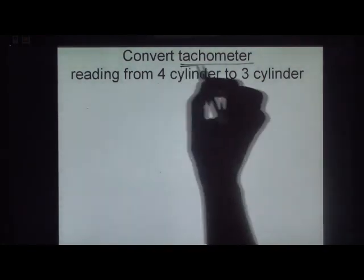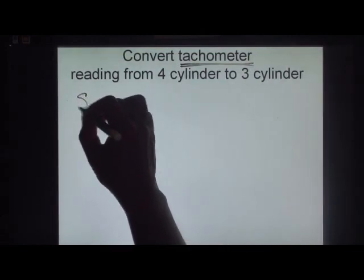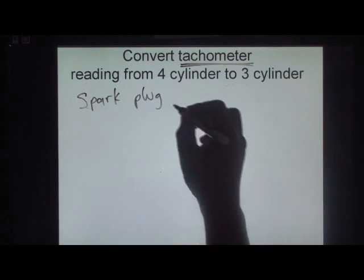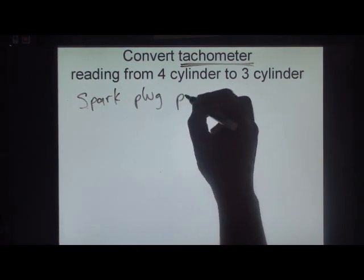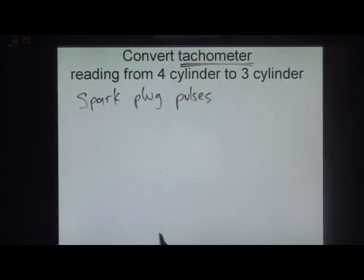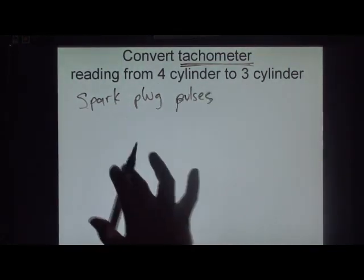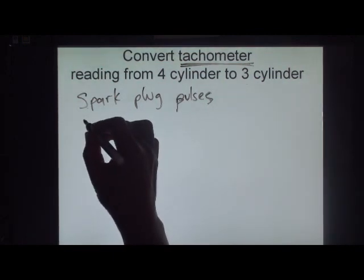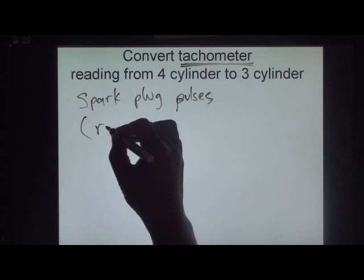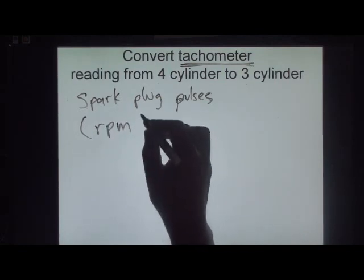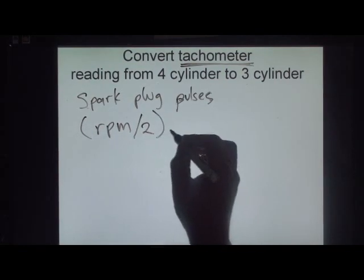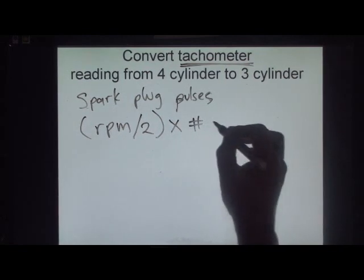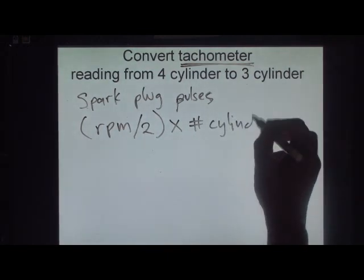Ang tachometer natin, ang binabasa niya is yung spark plug pulses. Ito yung formula ng pulse: yung RPM, i-divide mo sa 2, and then i-times mo sa number ng cylinder.